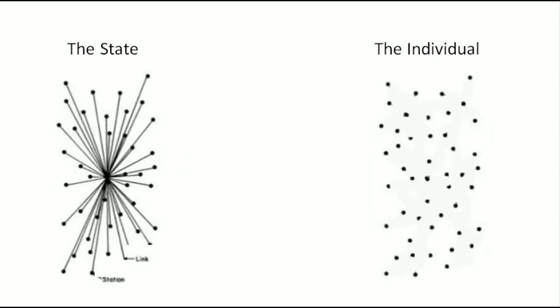We can diagram that. The state might be organized from a central government, perhaps a single leader, whereas the individual works on their own. We think of the state as a single organized collective whole. We think of the individual as atoms — a kind of atomism. Indeed, the word democracy itself comes from rule by the people, but it also comes from Democritus, who had an atomistic view of the world. There's an interesting coincidence there.